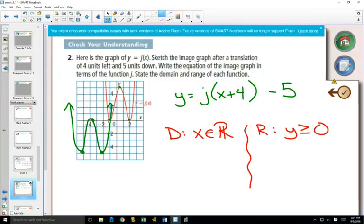For our green graph, when you move it left or right, does that change our domain? Usually, but if the domain was everything to begin with, it's still going to be everything.